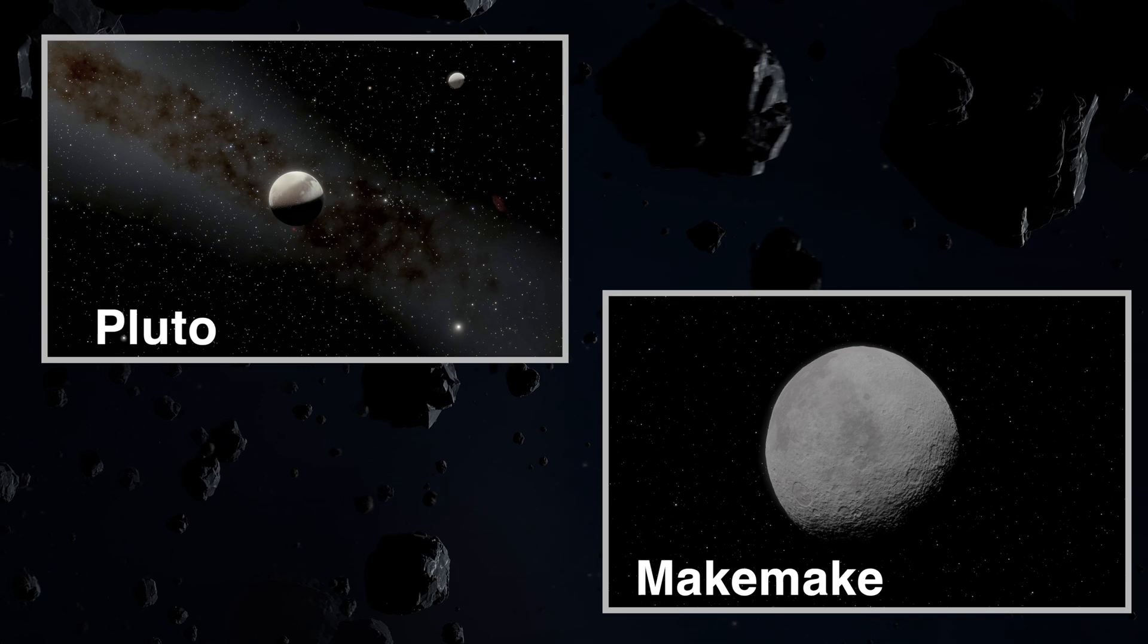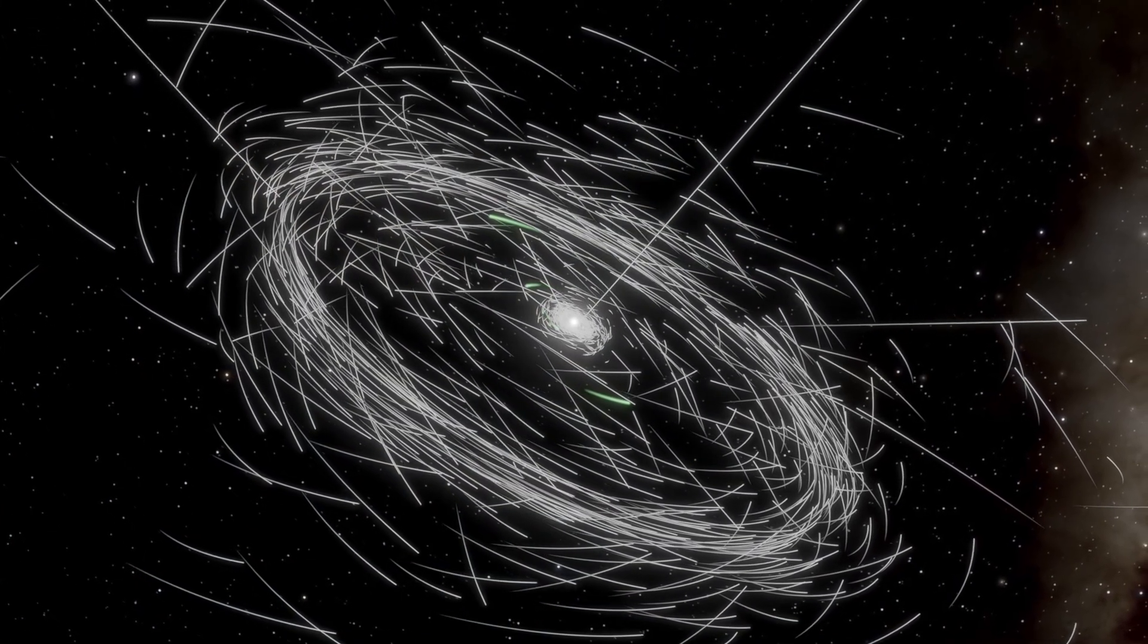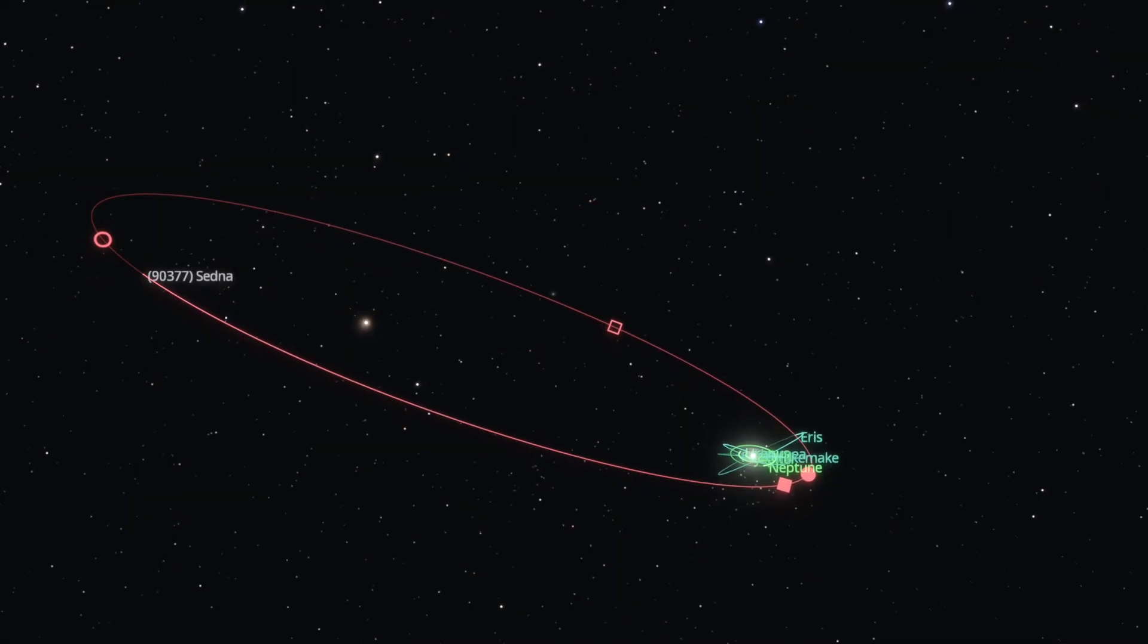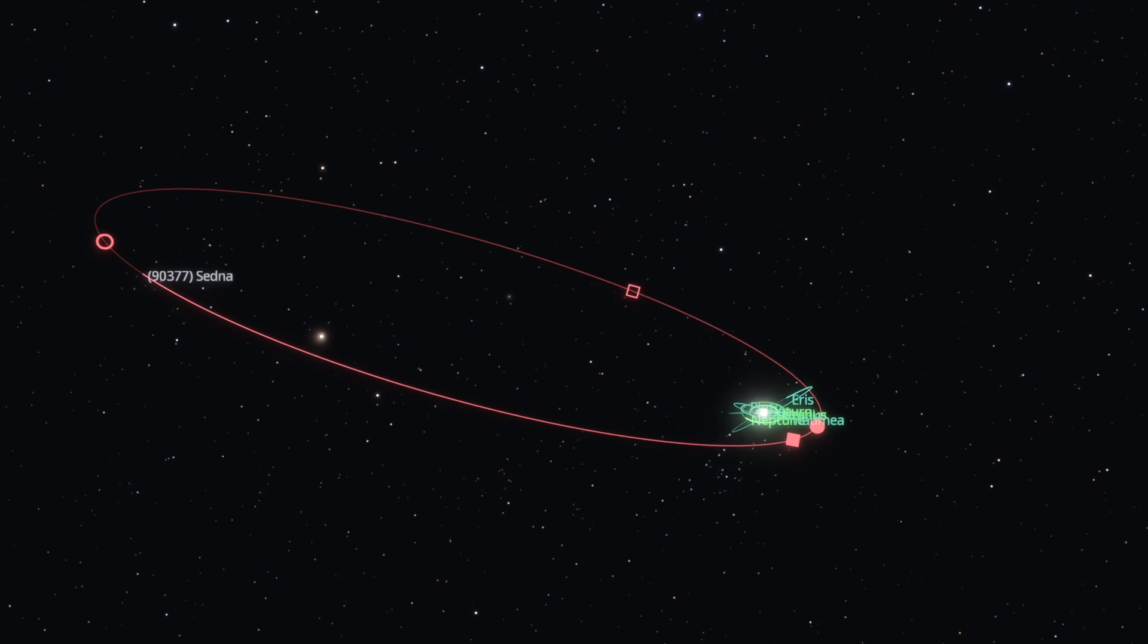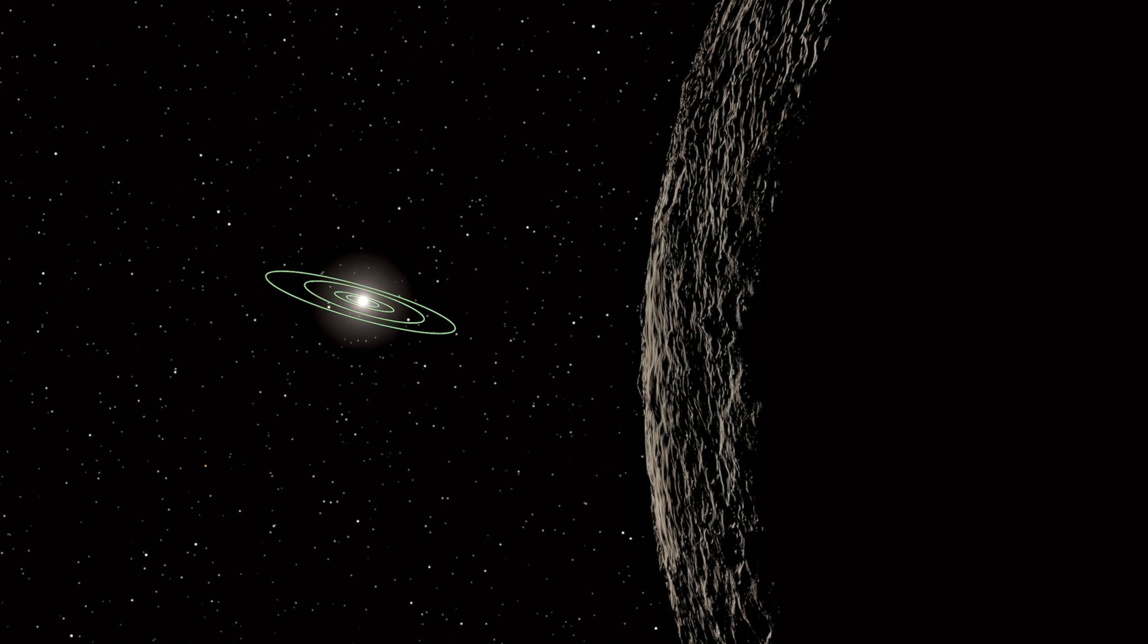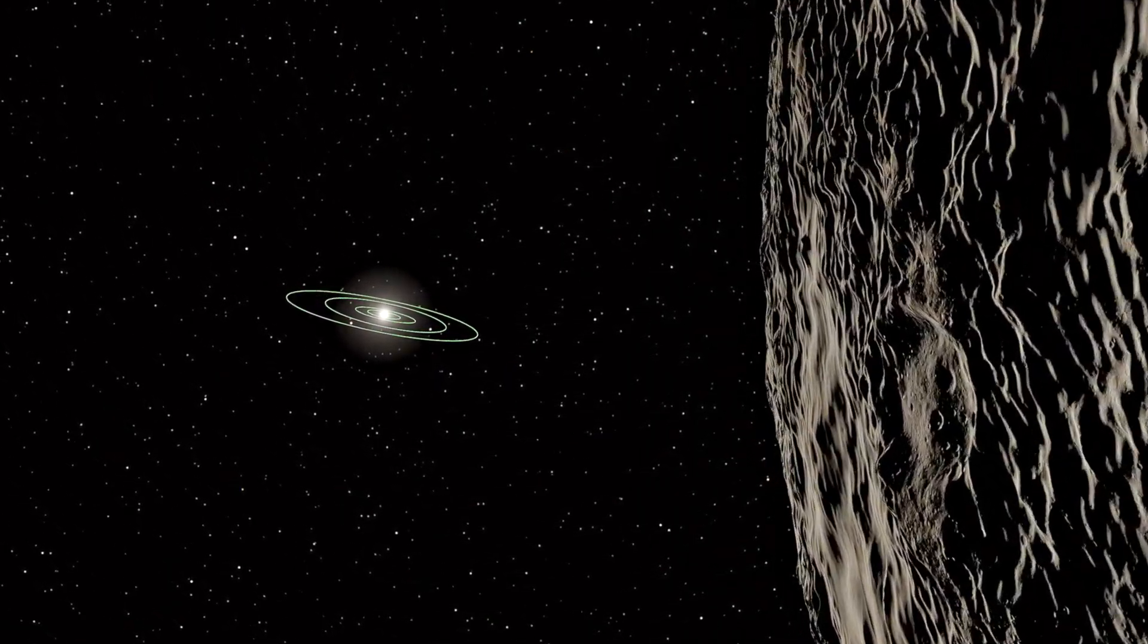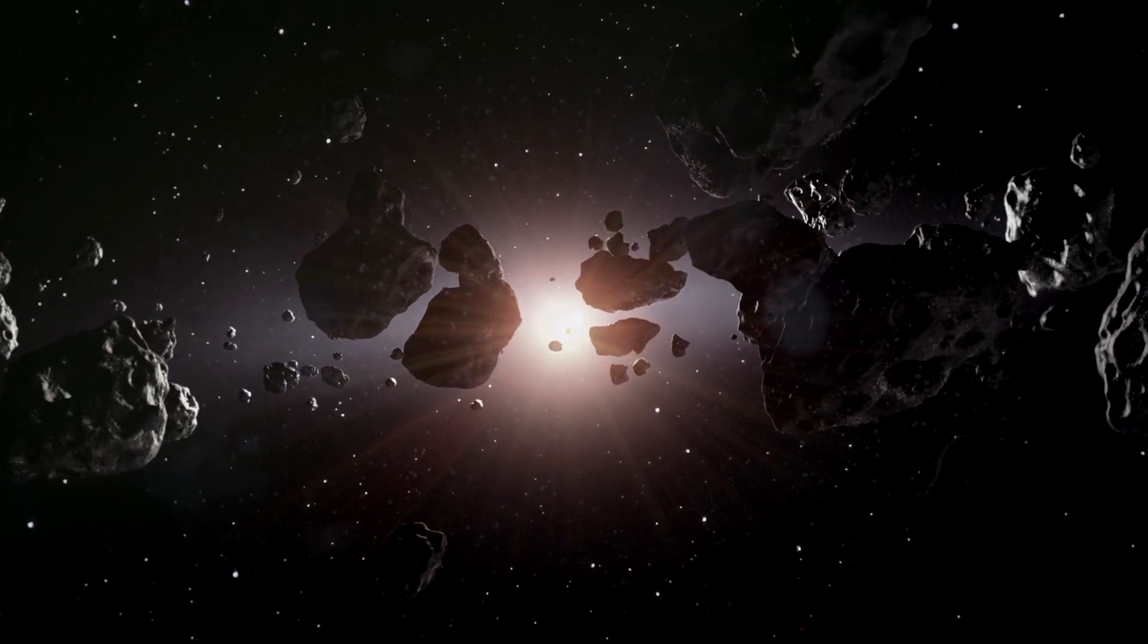Around 50 astronomical units from the Sun, the population drops off sharply, as if something once trimmed the edge clean. Then there's Sedna, a distant dwarf planet with an orbit so stretched and isolated it suggests a gravitational influence we haven't yet identified. These features suggest something happened. Something reshaped this part of the solar system, and a stellar companion present during the Sun's earliest days fits the pattern.